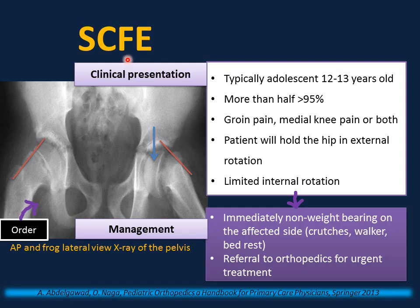Slipped capital femoral epiphysis is another important cause of limping. Delayed diagnosis can cause osteonecrosis and degenerative joint disease. Typical presentation is during adolescence between 12 and 13 years of age; more than half of patients are obese. They present with groin pain, medial knee pain, or both. If a patient presents with knee pain and the knee exam is normal, always consider the hip as the source. The patient holds the hip in external rotation and has limited internal rotation on exam. Order a pelvis radiograph — AP and frog lateral view — and draw a Klein's line along the superior femoral neck, which should intersect the femoral epiphysis. If it does not, this is a slipped capital femoral epiphysis. Immediately restrict weight bearing on the affected side, provide crutches or walker and bed rest, and send to the ER for immediate referral to orthopedics.